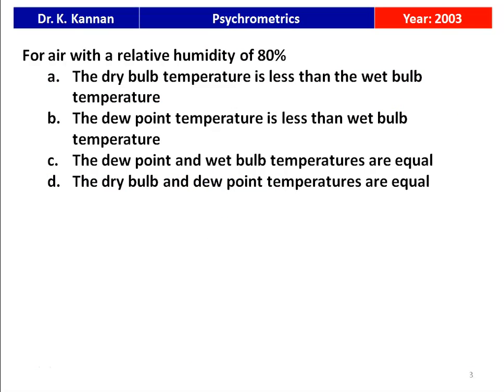The first question is from the 2003 question paper. For air with relative humidity 80 percent, four options are given: the dry bulb temperature is less than the wet bulb temperature; the dew point temperature is less than the wet bulb temperature; dew point temperature and wet bulb temperatures are equal; and dry bulb temperature and dew point temperatures are equal.